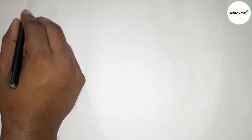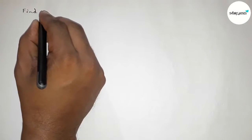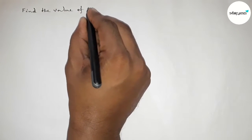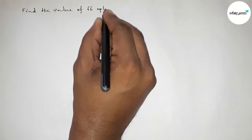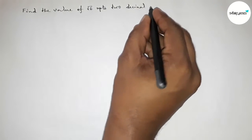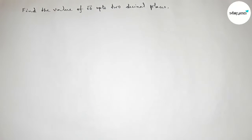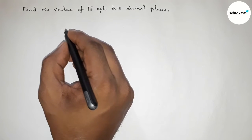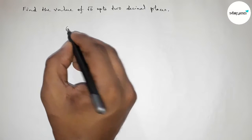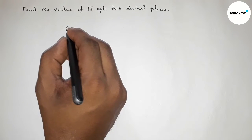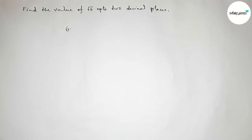Hi everyone, welcome to SI Share Classes. Today in this video we have to find the value of root 6 up to 2 decimal places in an easy way. Please watch the video till the end. So first of all, write here the number 6 and we can take a decimal point here.